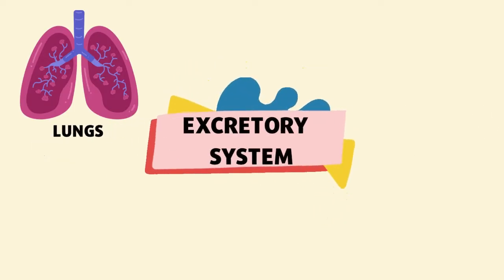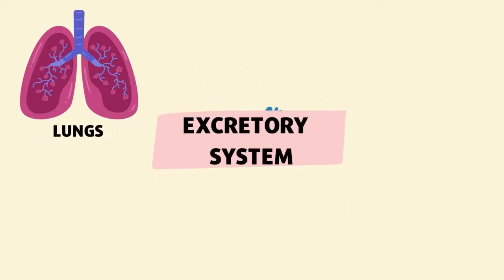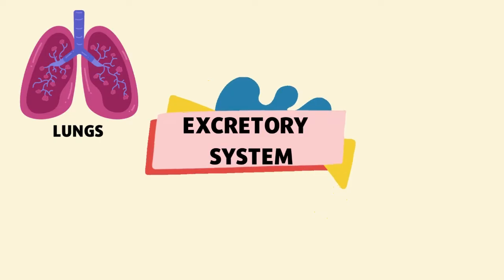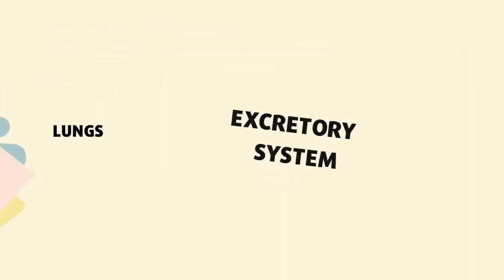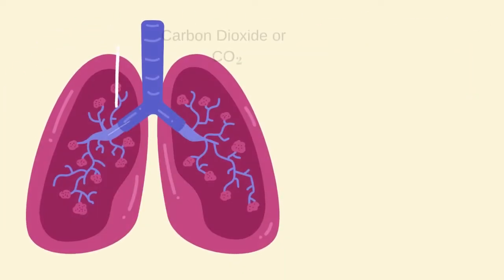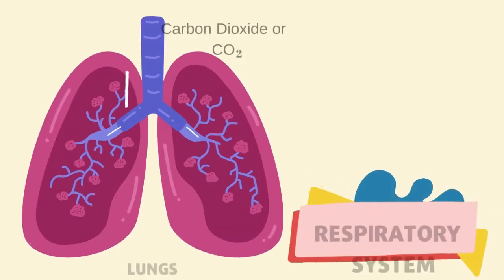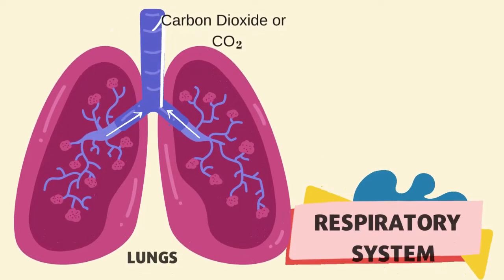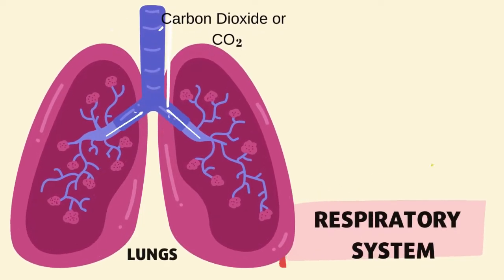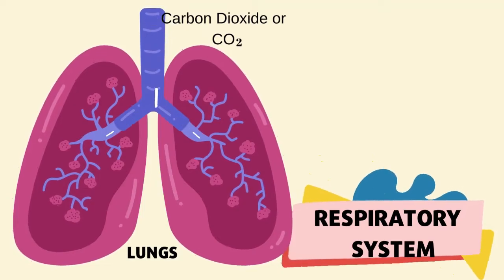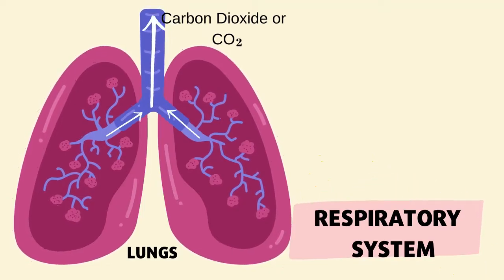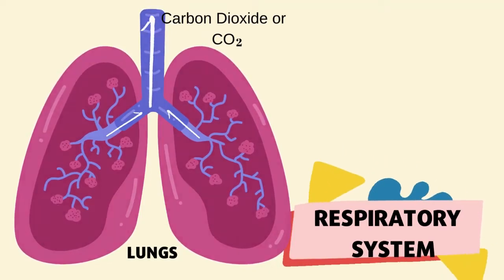The excretory system works with other systems and organs in the body. The lungs are part of the respiratory system, which eliminates water vapor and carbon dioxide through exhalation. So this is the first organ of the excretory system — the lungs.